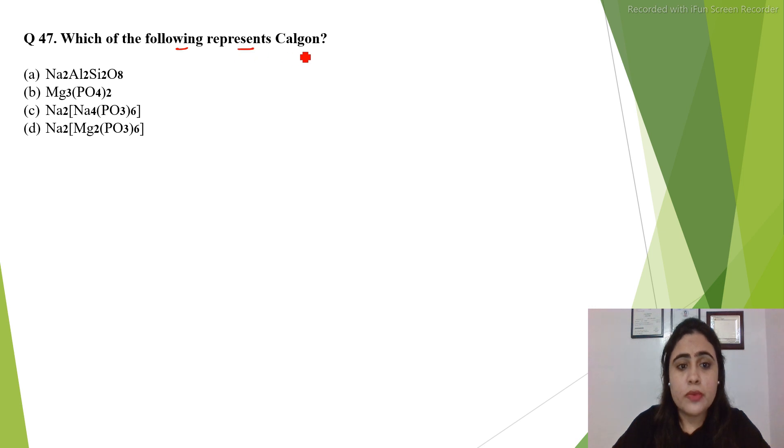First question is: which of the following represents calgon? Now calgon is a method which is used to remove the permanent hardness of water.